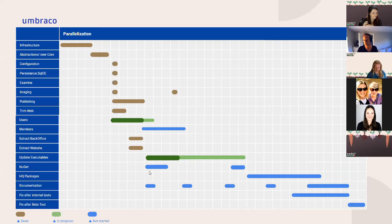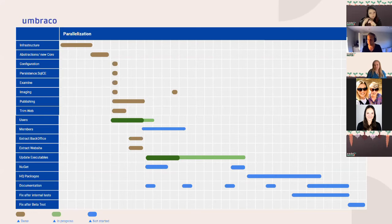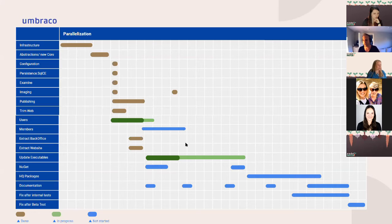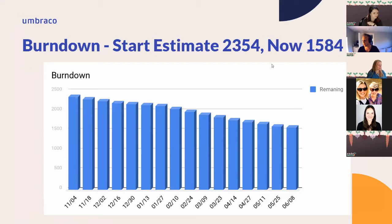In theory we could also start updating our NuGet packages — we need to update to all the new assemblies and references — and documentation could be started already. But as you can see, we're not even halfway through the update executable, the one about eliminating Umbraco Web. The start estimate was 2,354 story points and now we are at 1,584, so we have a steady burn down.